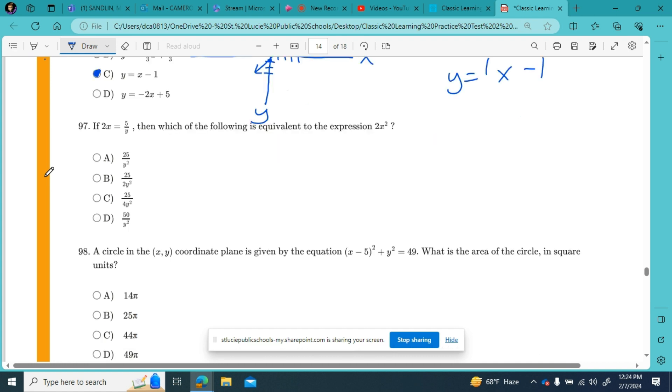If 2x equals 5 over y, then which of the following is equivalent to the expression 2x squared? So in order for me to find this, what I want to do is I want to get this x right here only by itself. So 2x equals 5 over y.